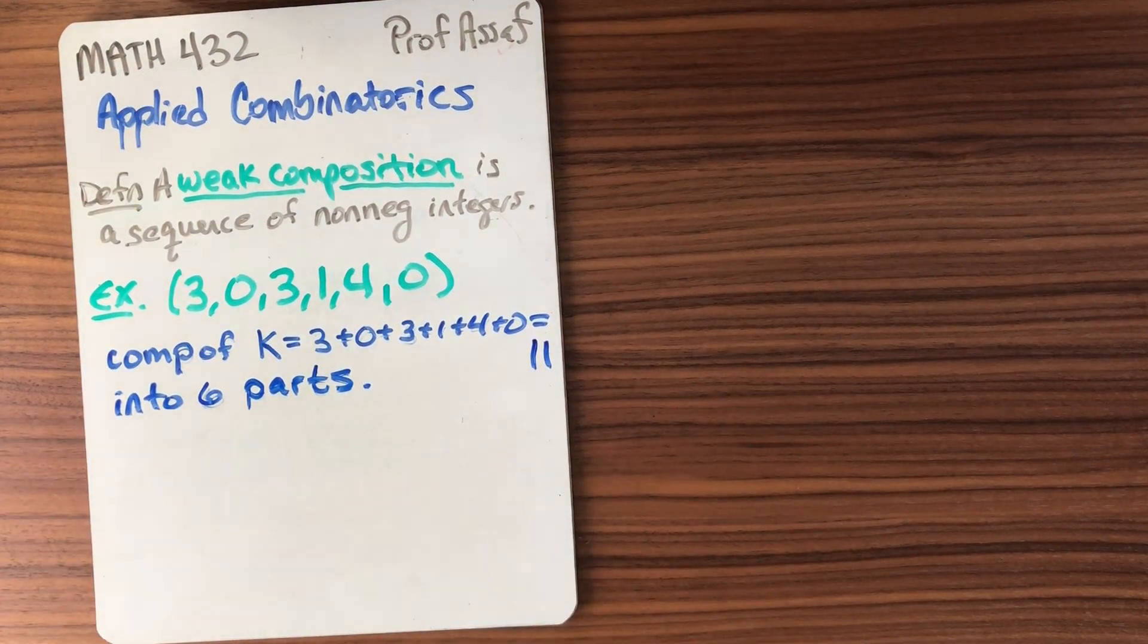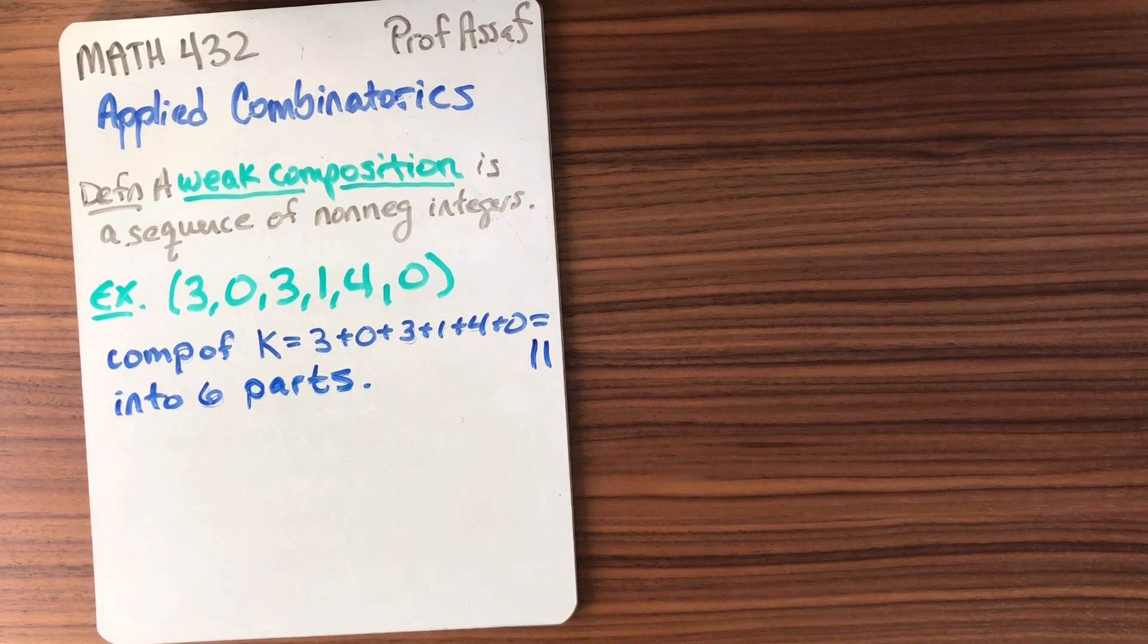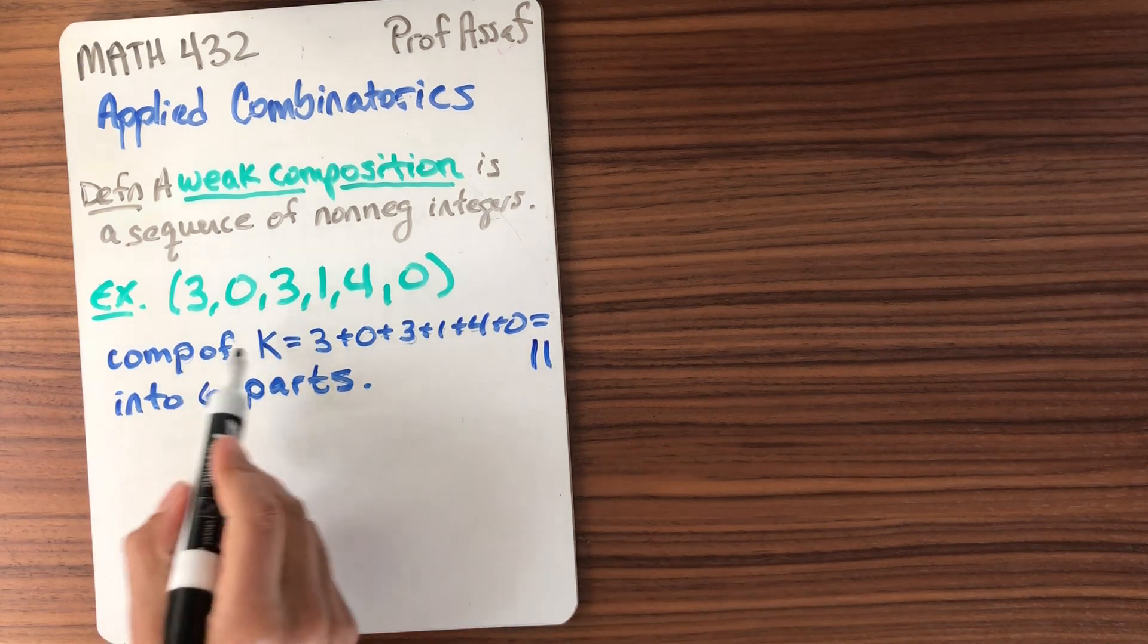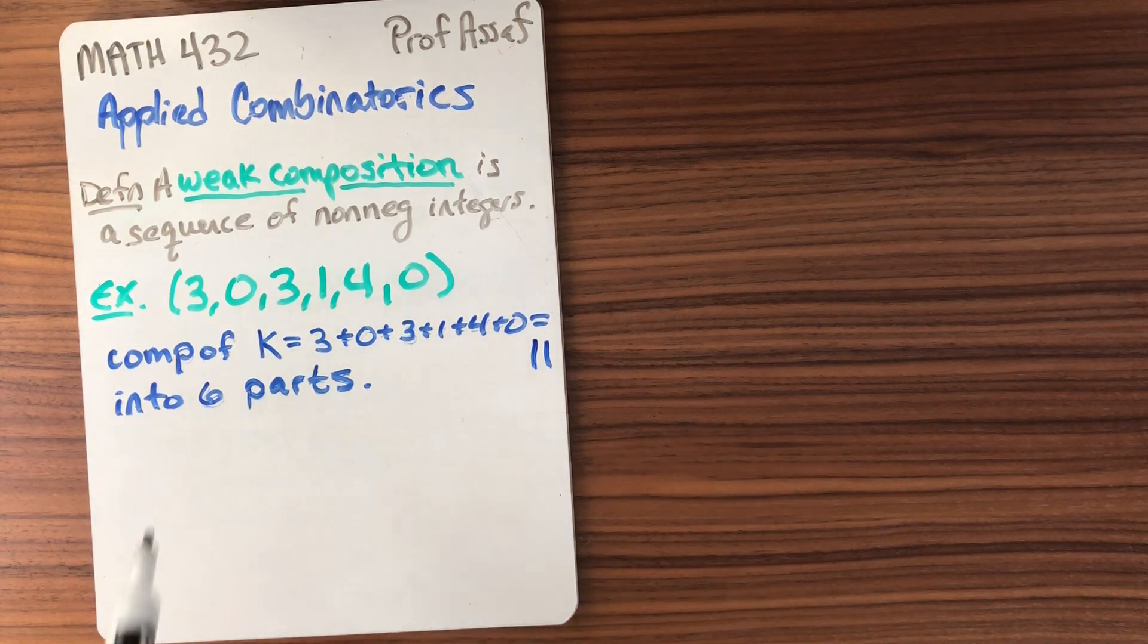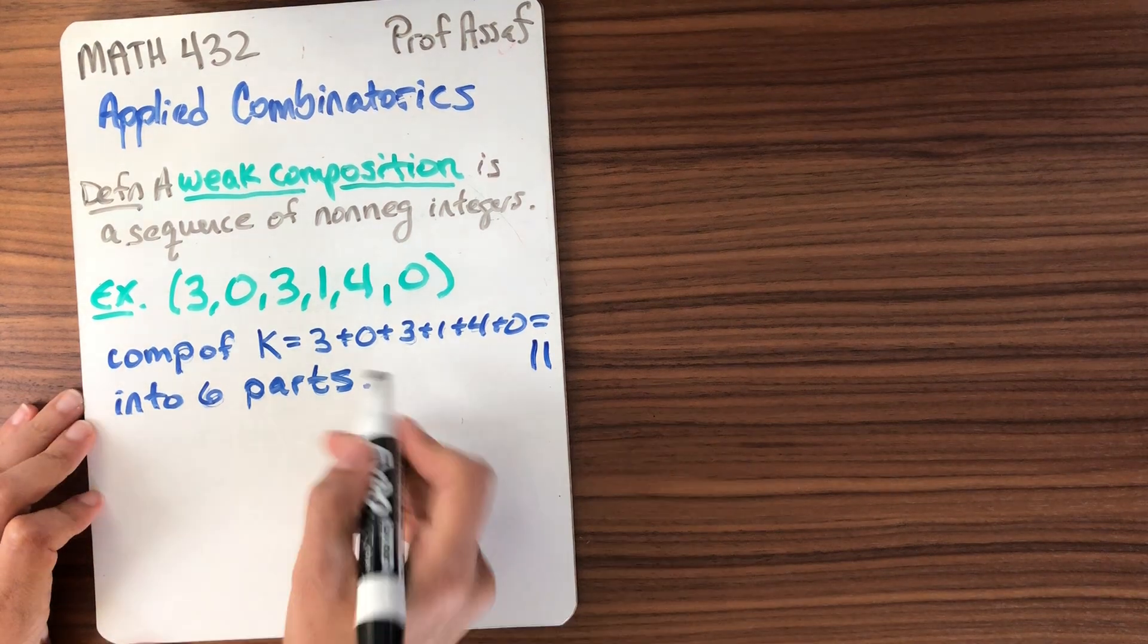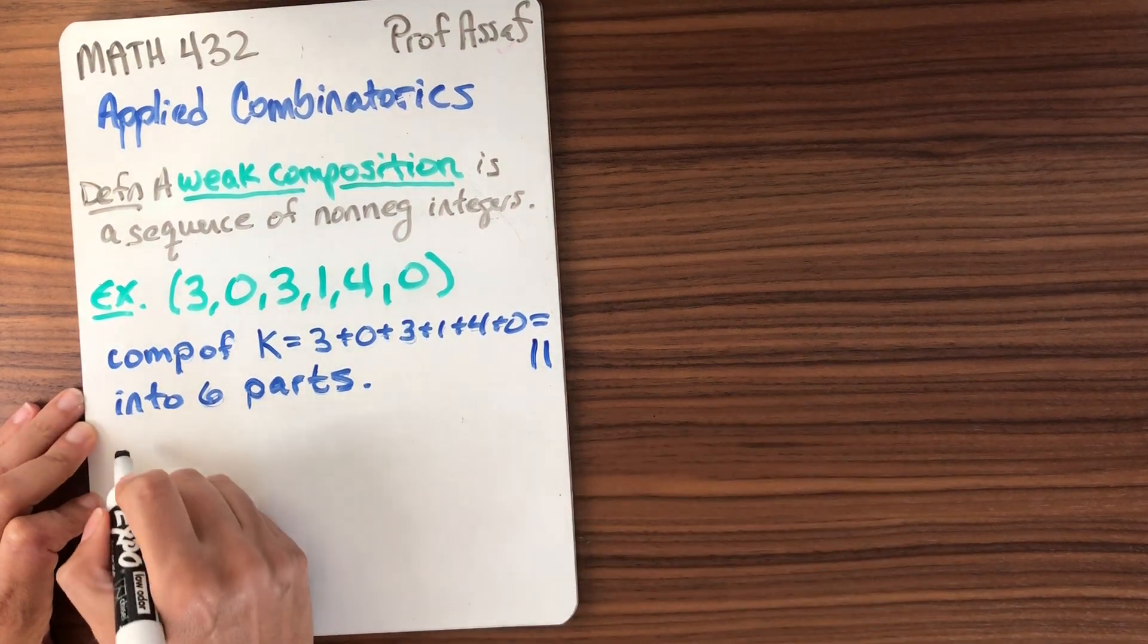So that's certainly something that we can think about and we can think about enumerating these. Of course they're infinitely many unless I add some kind of constraint. So let's constrain both the size, which is what we say it's a composition of, and the number of parts as well.